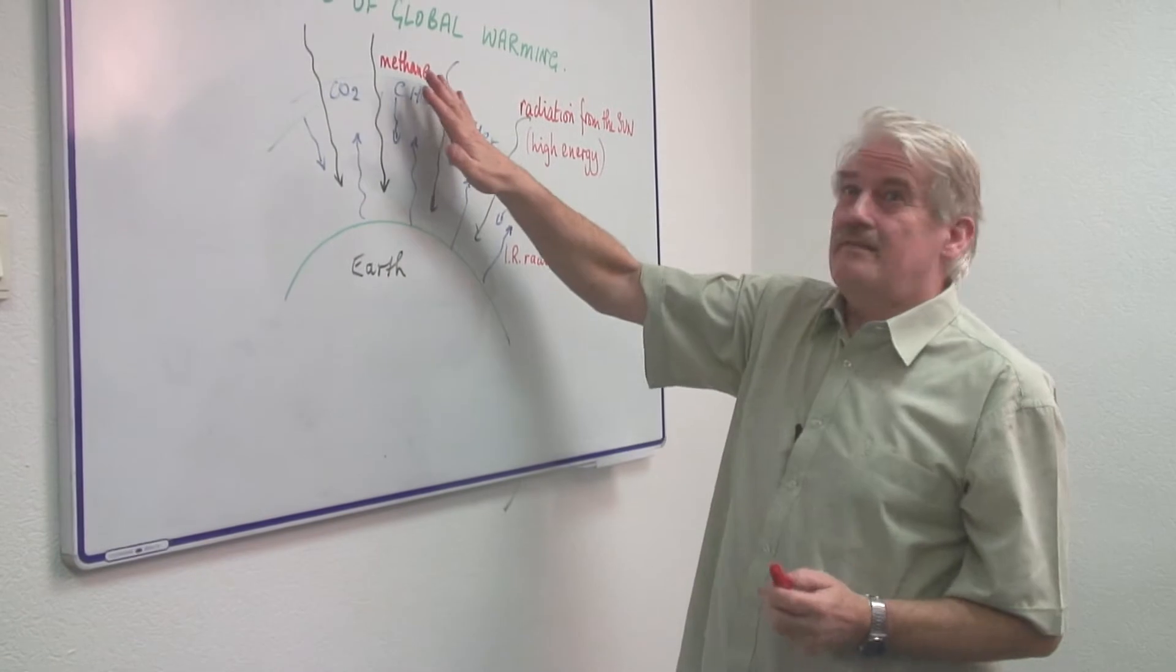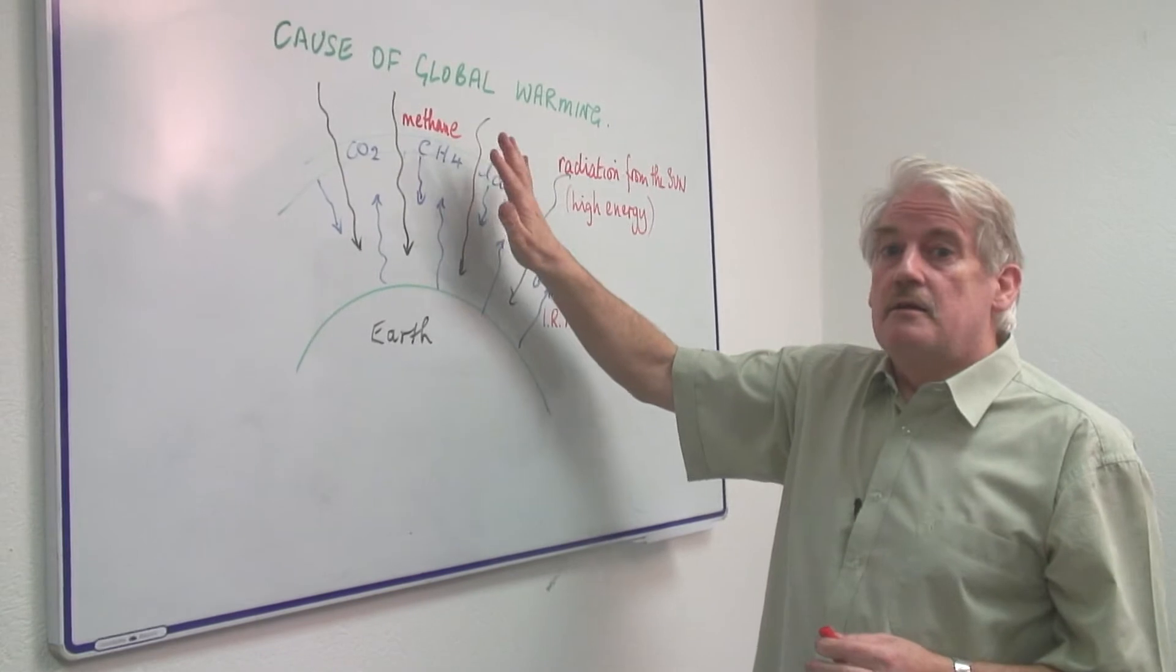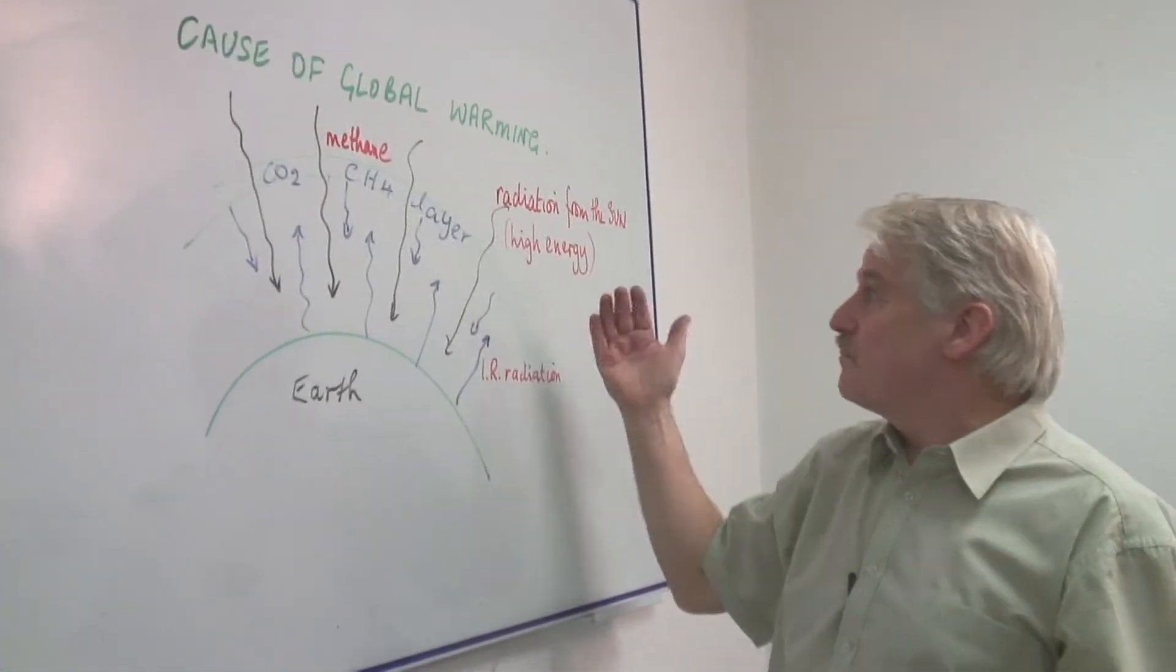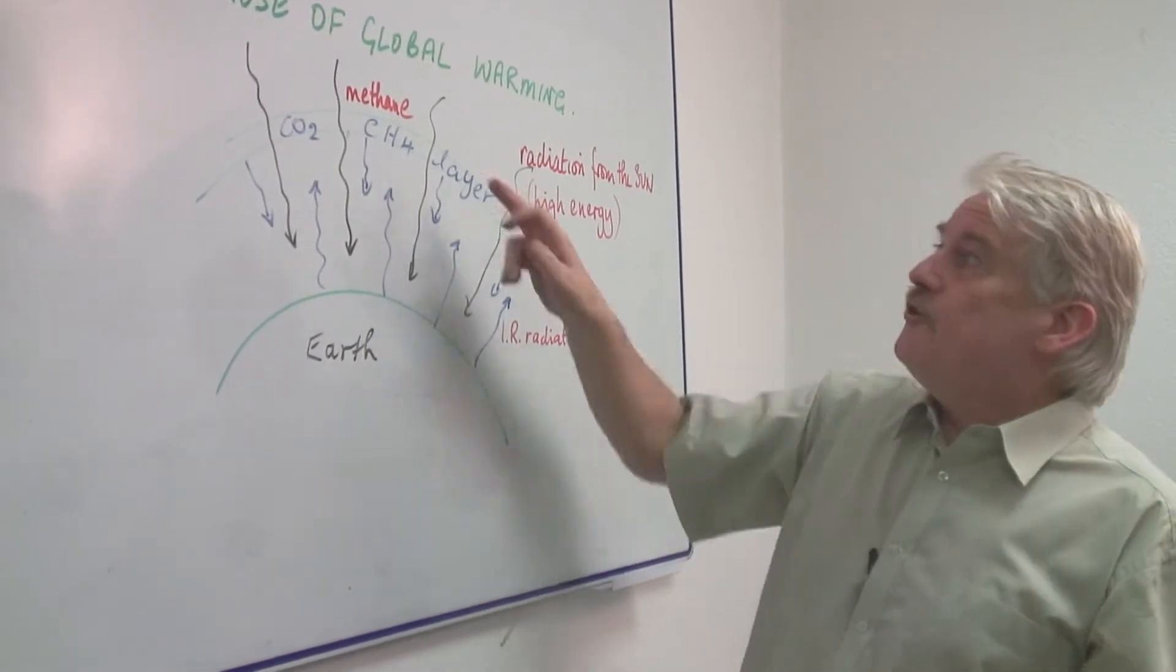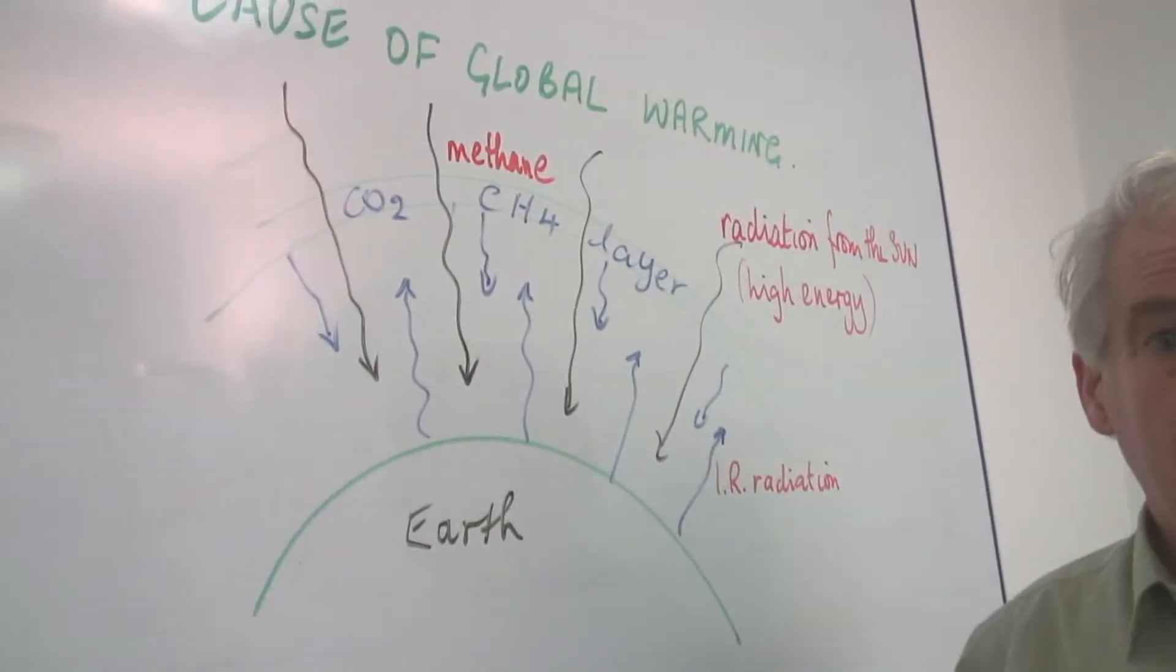Methane is in fact one of the worst of the greenhouse gases. It is a common gas produced by things decaying on earth and it sits up there in the atmosphere. If you burn methane to create carbon dioxide, that is actually an improvement.